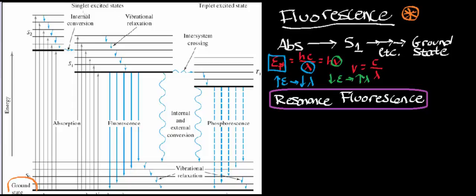Looking at these singlet excited states, let's focus on S1. In another video we'll look at S1 versus S2, but from an analytical chemistry perspective you don't really need to know the difference. What you do need to know is that this bold line right here represents a given energy state. The one at the top is going to be the highest energy — notice the vertical axis here is energy — so that state would be the highest energy.